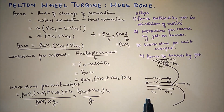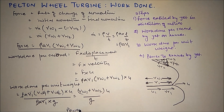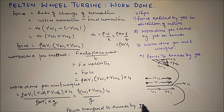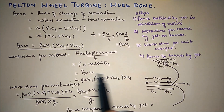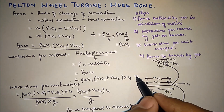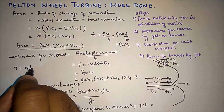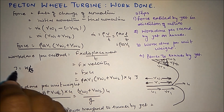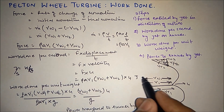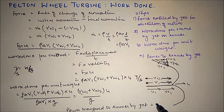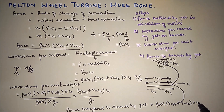To find the power transferred to the runner by the jet, we note that work done per second has units of joules per second, and joules per second equals watts. So power equals rho*A*V1*(Vw1 + Vw2)*U in watts. When we divide by 1000, we get the power in kilowatts.